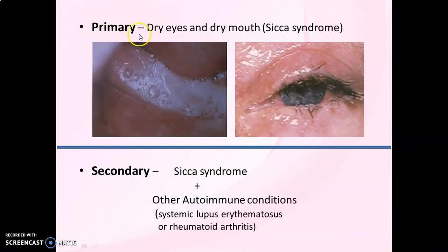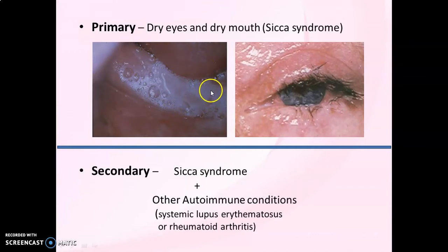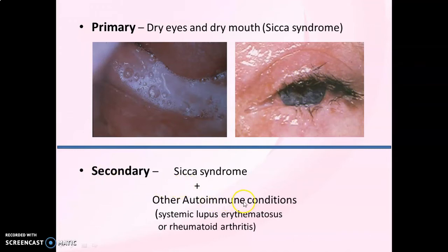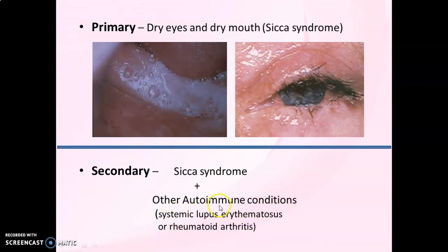Primary Sjögren's syndrome is not associated with any other autoimmune disorder and affects the salivary and lacrimal glands only. There is reduced production of saliva causing xerostomia; the residual saliva appears frothy. Reduced lacrimal secretion causes xerophthalmia or dry eyes. Secondary Sjögren's syndrome is associated with other autoimmune conditions — that is, sicca syndrome along with other autoimmune diseases. Sjögren's syndrome is found to be present in 15% of patients with rheumatoid arthritis and 30% of patients with systemic lupus erythematosus.